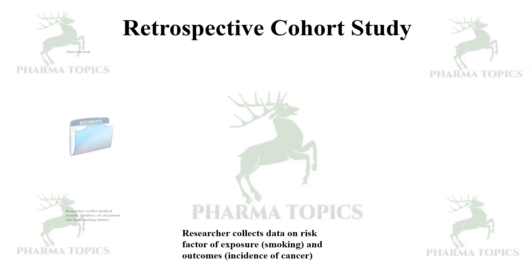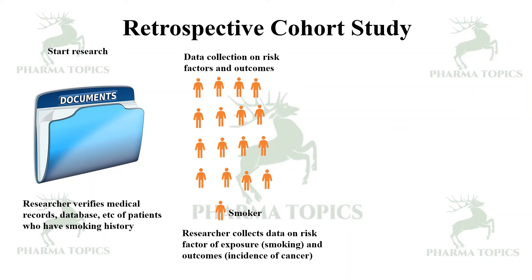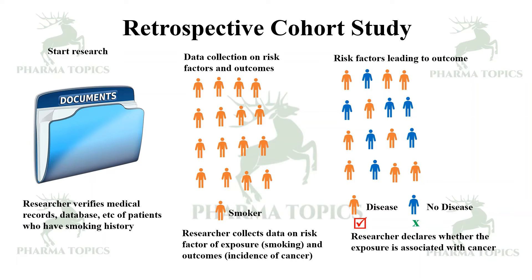In a retrospective cohort study, at the start of the research the researcher verifies medical records, databases, and other details of patients who have a smoking history. Data collection on risk factors and outcomes: researchers collect data on whether they are smokers and connect the outcomes — that is, the incidences of cancer. They then declare whether smoking influences cancer in that particular group — that is called a retrospective cohort study.